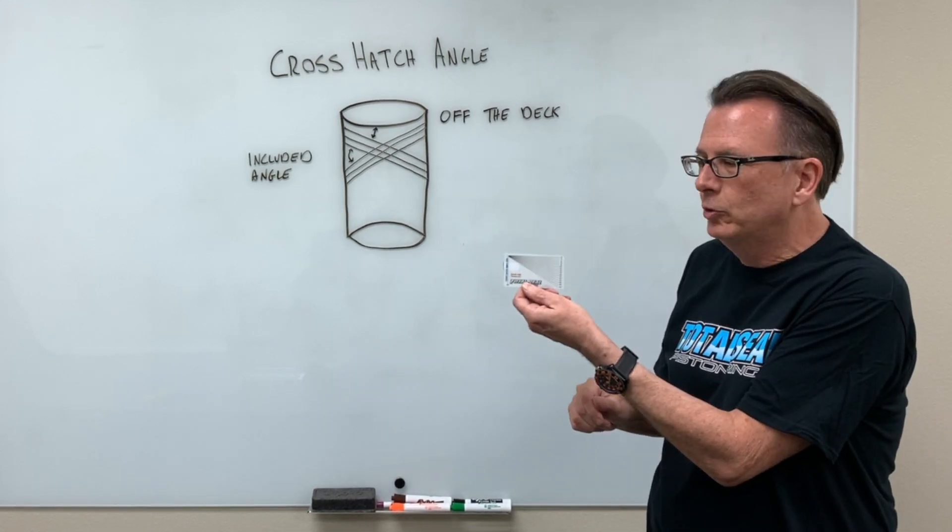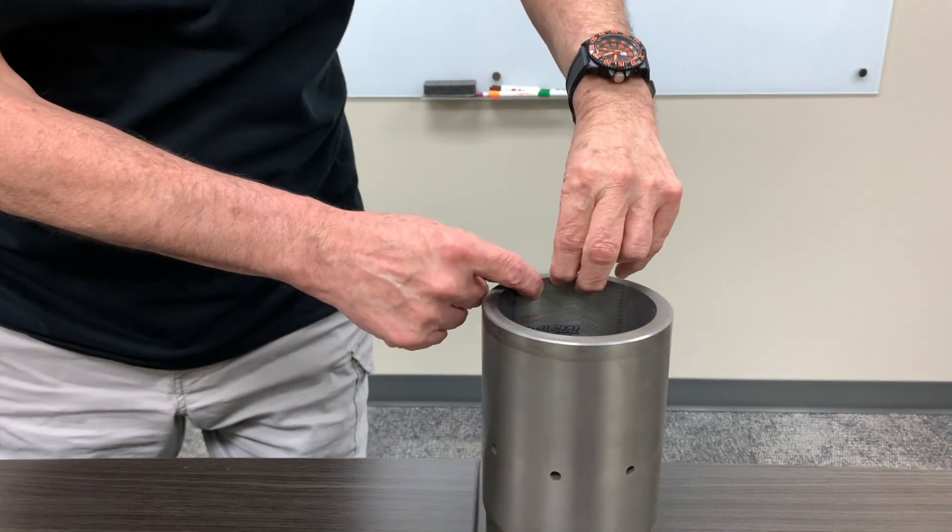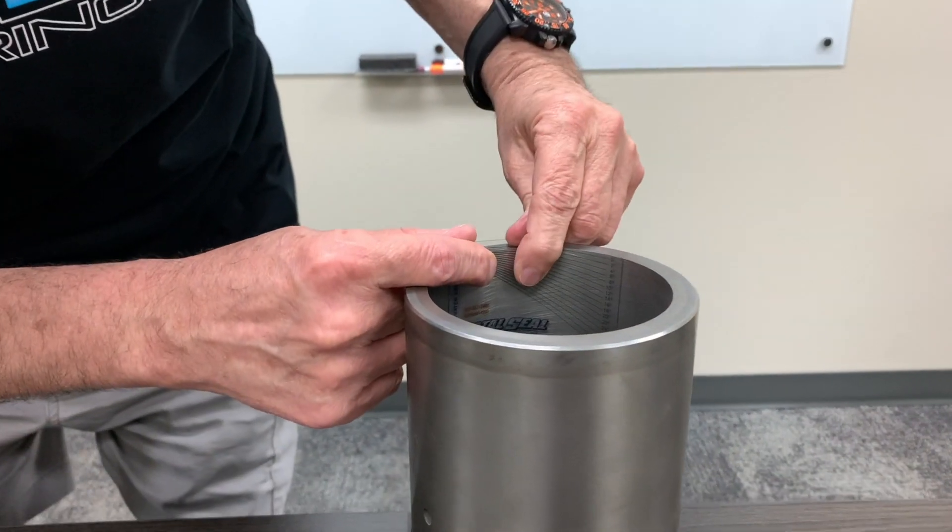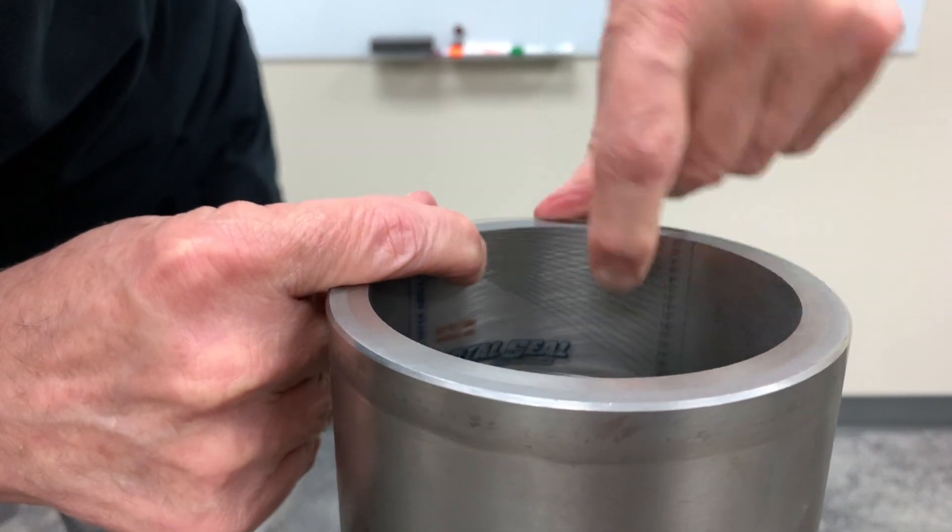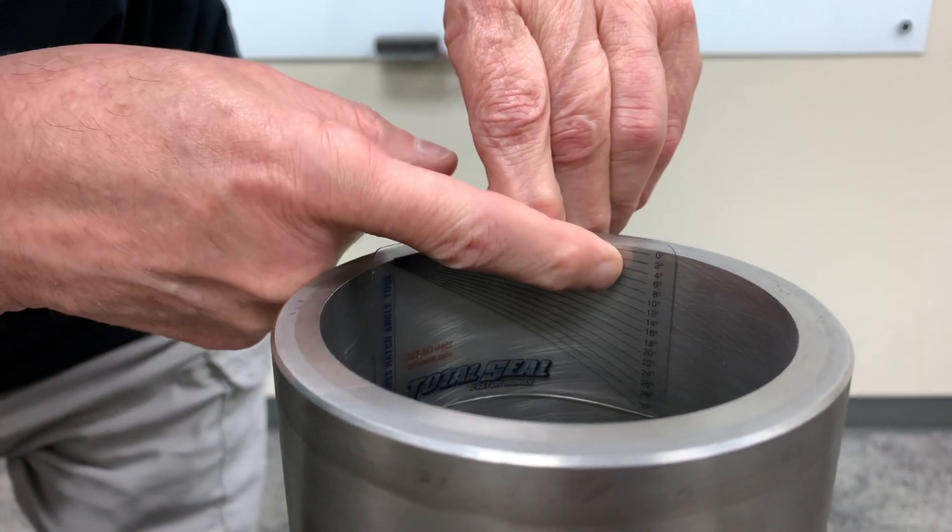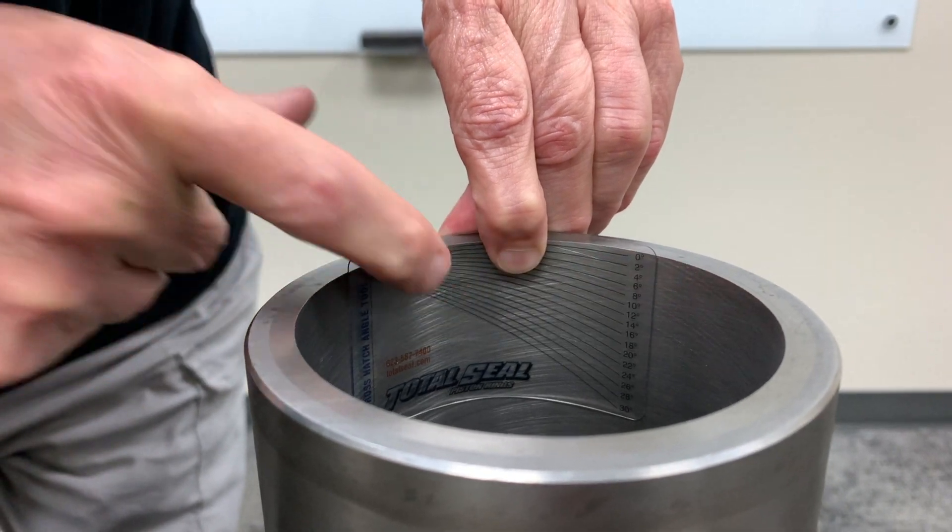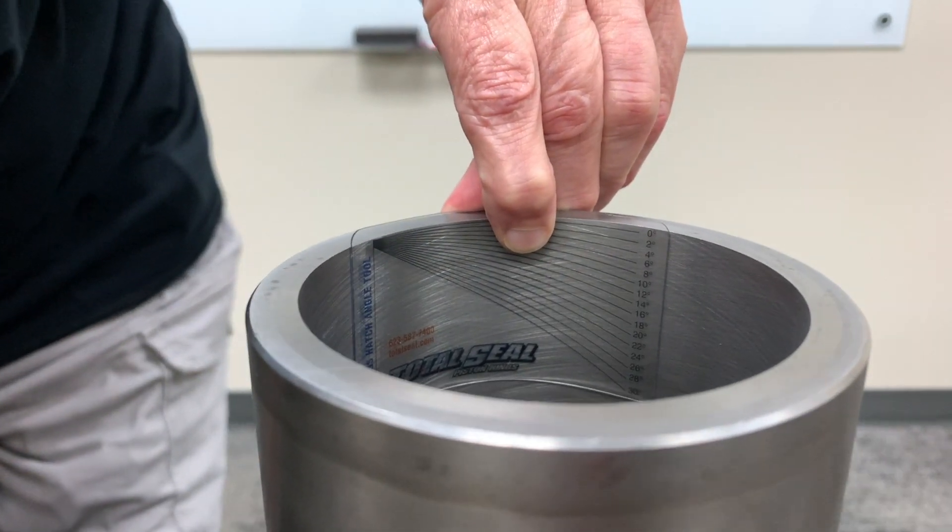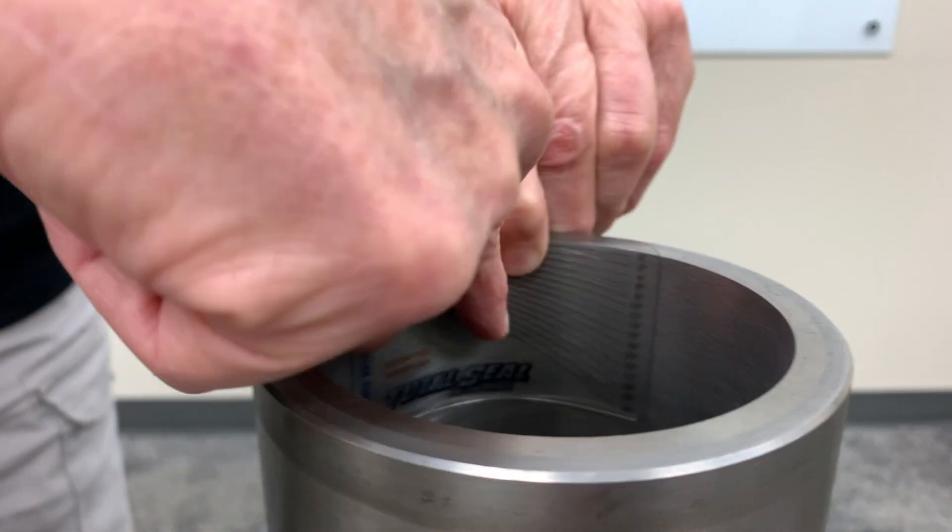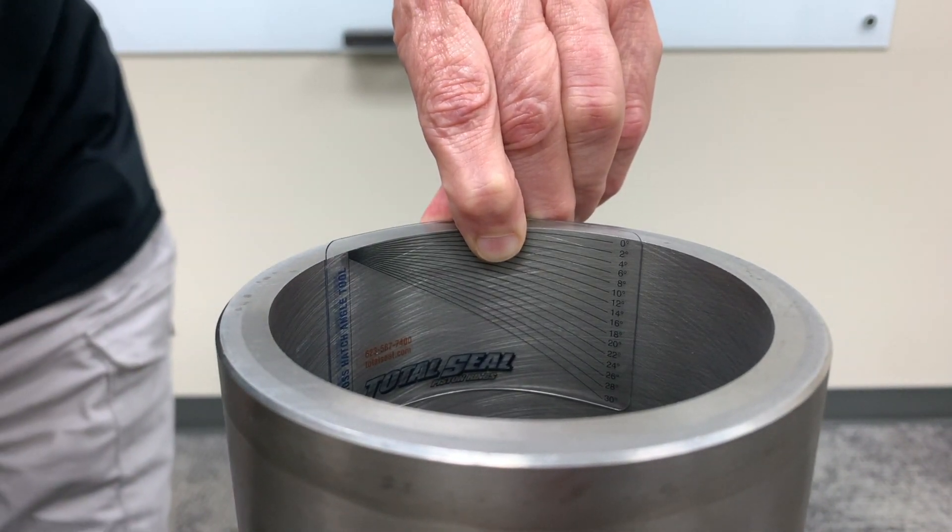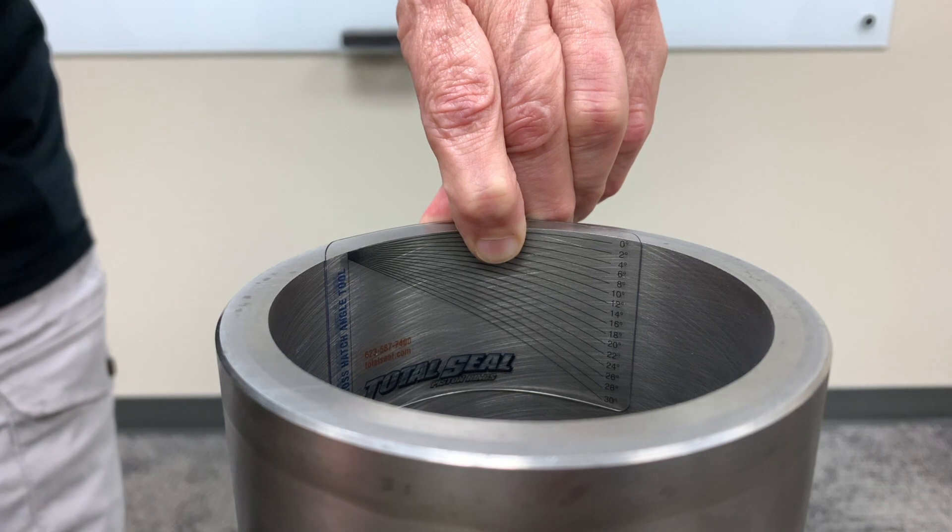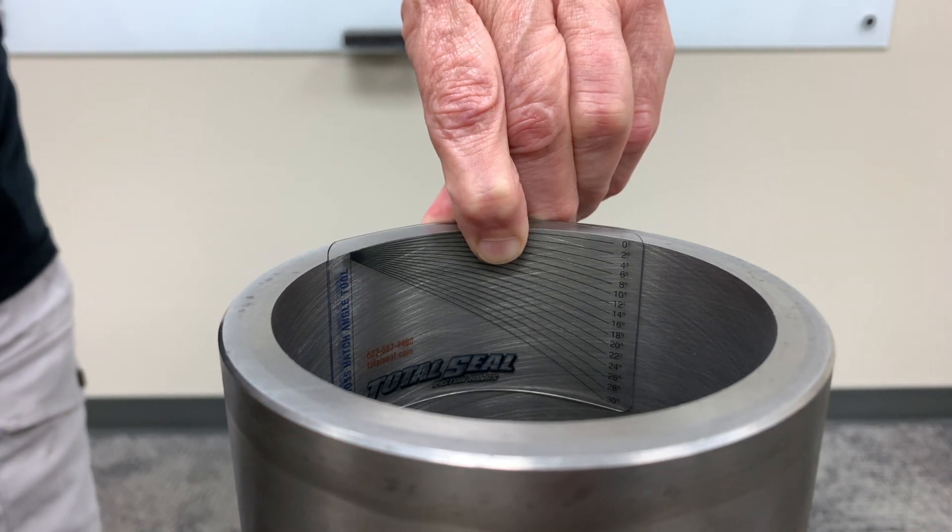So we're going to take this simple tool, angle checker, we're going to put it in our cylinder, or in this case in a sleeve that we've got here. We're going to line the zero angle up with the top of the deck. Keep in mind, I can't see it very well from where I'm at. And we're going to look at that angle coming down on that cylinder, and we're going to match it up. We're going to line it up with the lines on the checking card. The corresponding line is our angle off the deck or off our horizontal axis.